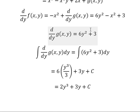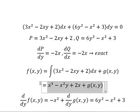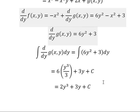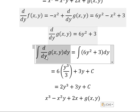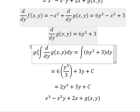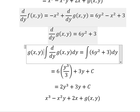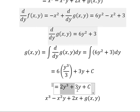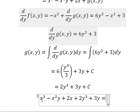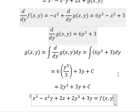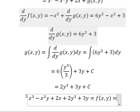Now we return back to this one. So the integration of this one, we have x³ - x²y + 2x + 2y³ + 3y. And we know that this equals to f(x,y), f(x,y) equals to C.